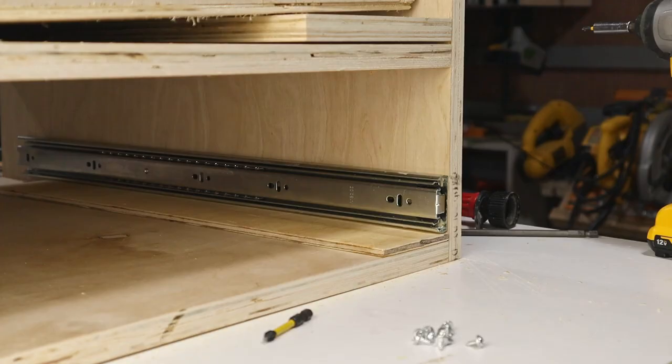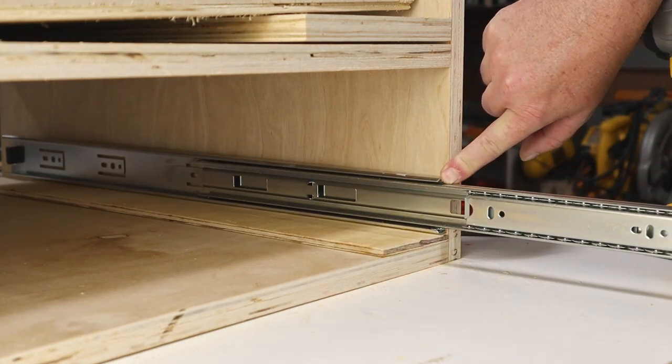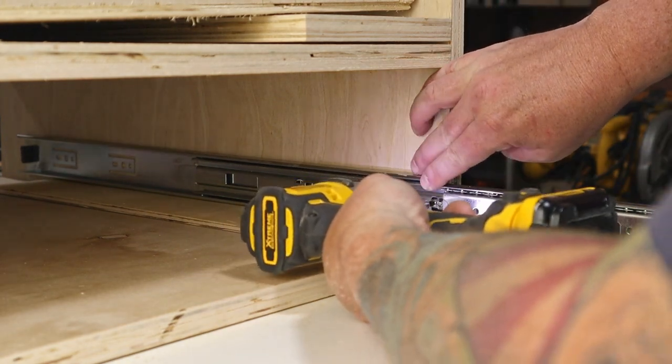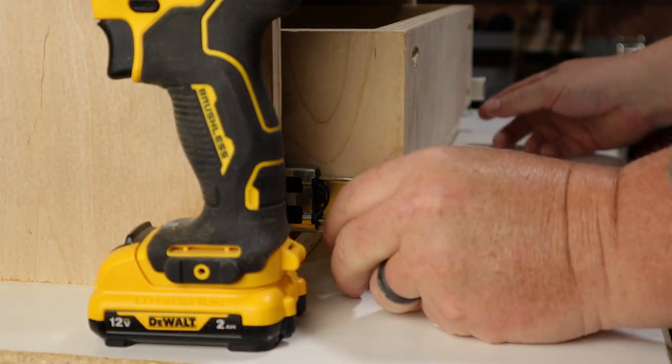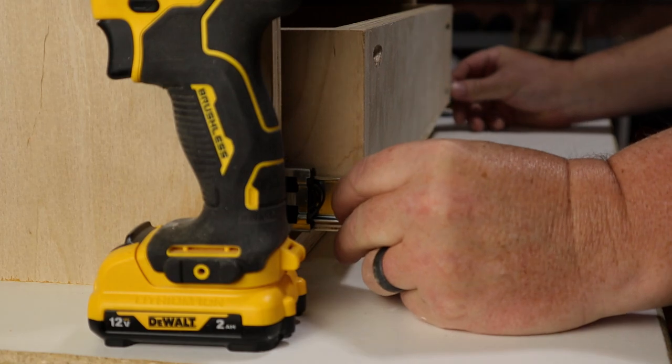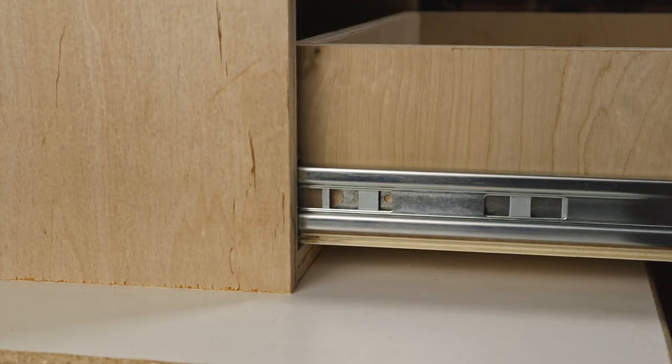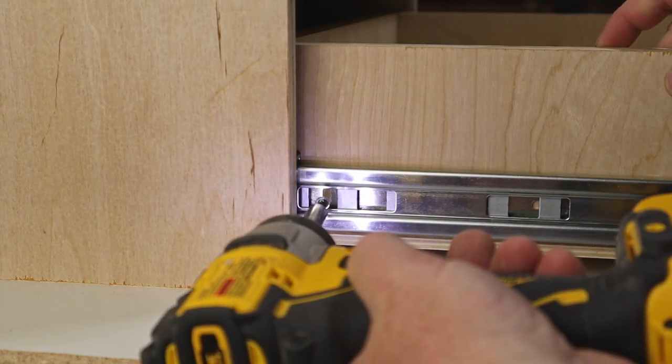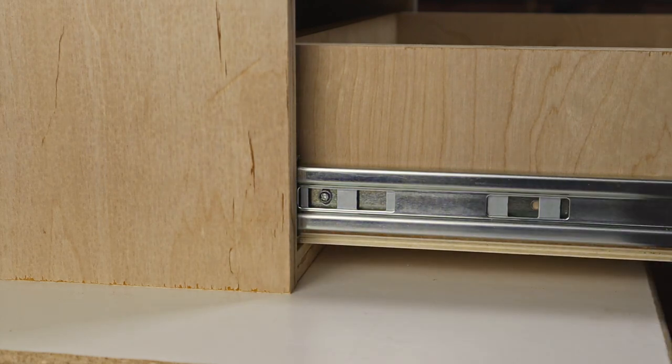To attach the drawer slides, I just add a small spacer on the bottom and then line up the front of the slide with the edge of the box. Then put in a couple of screws. And then slide the drawer into place. Move the drawer out a little and then pull the slide to the edge of the drawer and add another screw. Then add all the rest of the screws. This method seems to work fine for me. I'm not sure if it's the best method, but it's pretty quick and simple, so it's the way I do it.